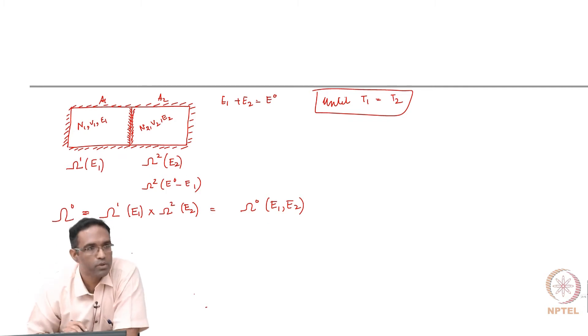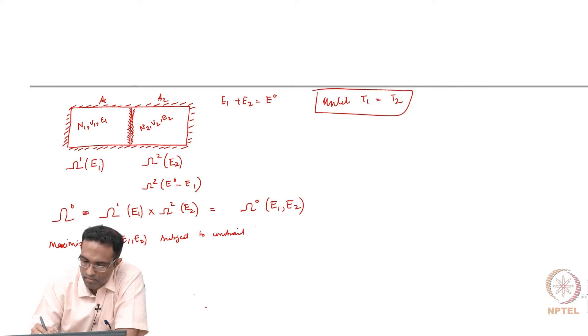Consequently, our problem reduces to that of a maximization or extremization problem where we have to maximize omega naught with respect to the variables E1 and E2 subject to the constraint that E naught is equal to E1 plus E2.